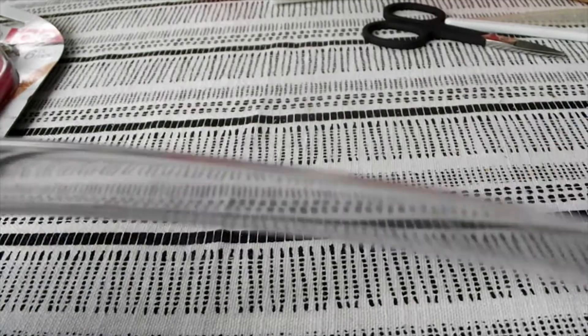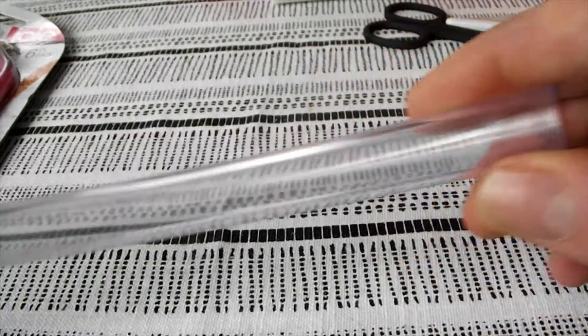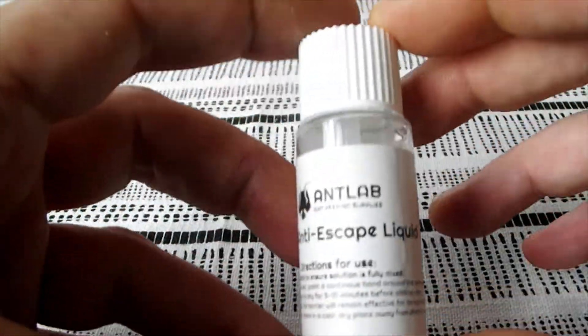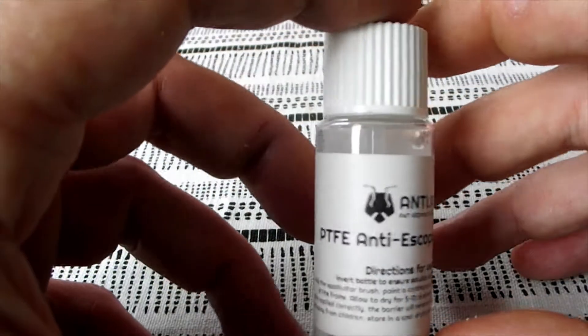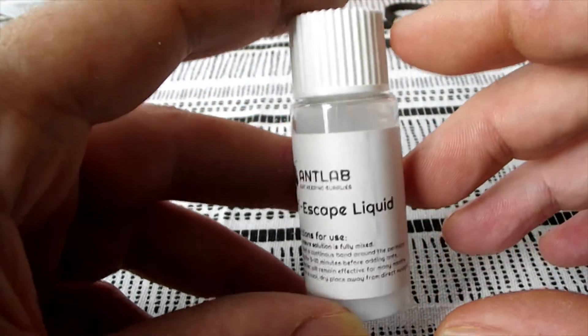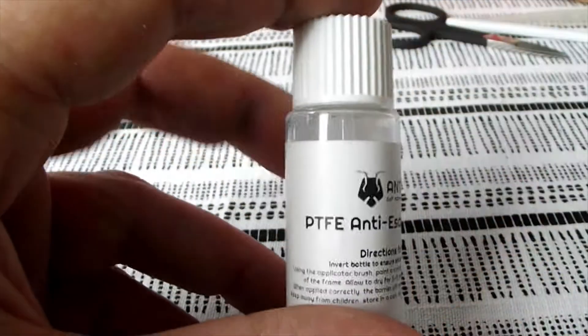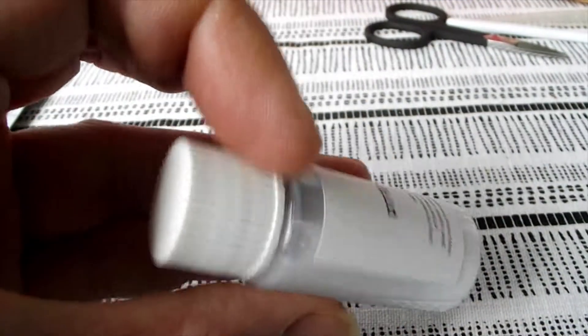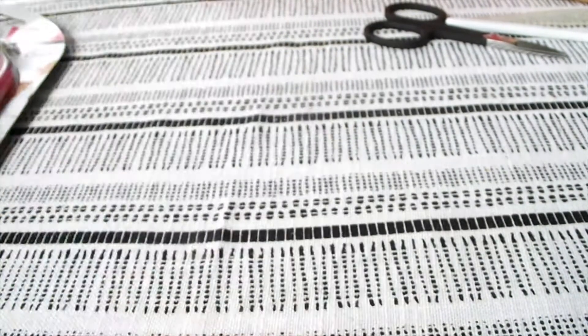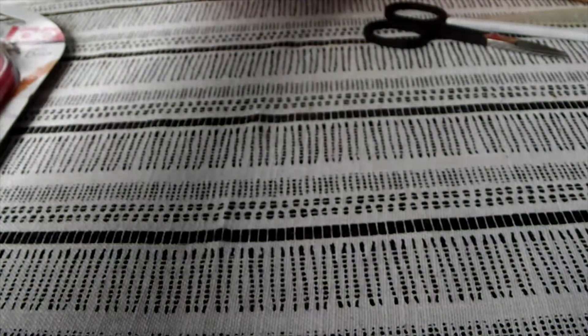Plastic pipe. You get a lot of this from ant suppliers. You'll end up with loads of plastic pipe when you later on start buying nests. PTFE. This is the anti-climb paint. This is what you paint on the side of your outworld that the ants can't get a grip on and they fall off. It's invaluable. You can't manage without it. You've got to stop them climbing. Otherwise, they will get out.